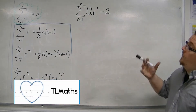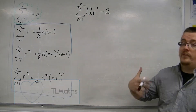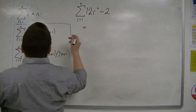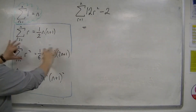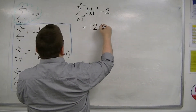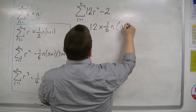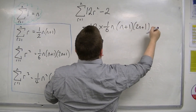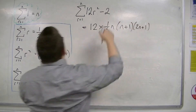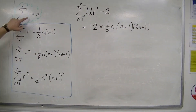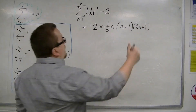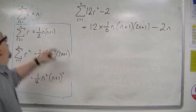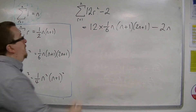For this one, we have the sum from r is 1 to n of 12r squared minus 2. So we've got 12 lots of r squared, so 12 lots of one sixth n, n plus 1, 2n plus 1. Take away 2, so take away 2 lots of n. We use this top one here for that take away 2.